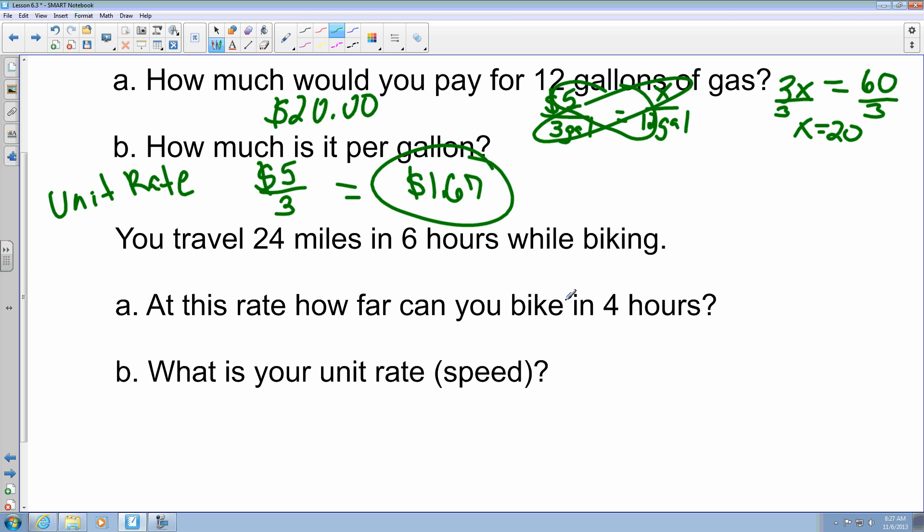Now, second problem. It says you travel 24 miles in 6 hours while riding a bike. At this rate, how far can you bike in 4 hours? So, if you know that you're going to go 24 miles in 6 hours, they want to know how many miles you're going to go in 4 hours.